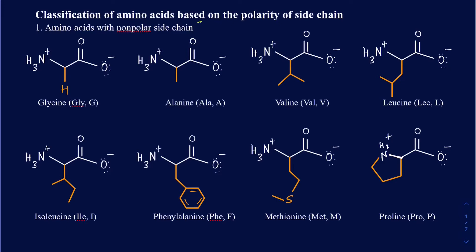Being non-polar, those sidechains are going to be hydrophobic, which means they don't really like water. The intermolecular interactions they're going to be making would be the London dispersion forces. The first one we have in our list is glycine. Every single amino acid is going to have a name, a three-letter code, and a one-letter code.